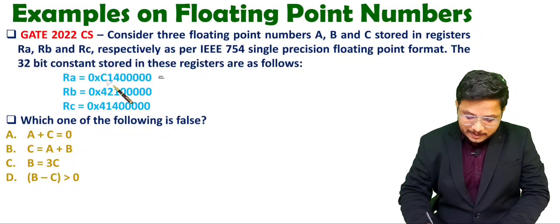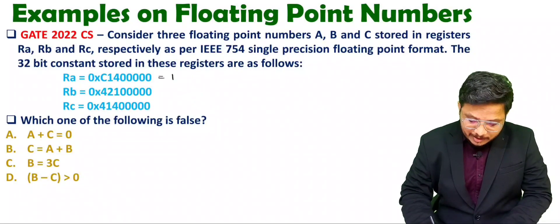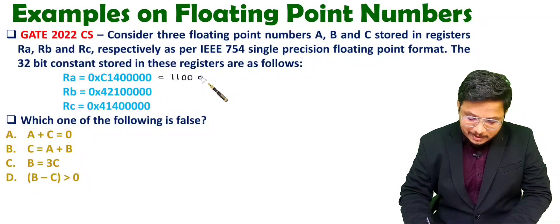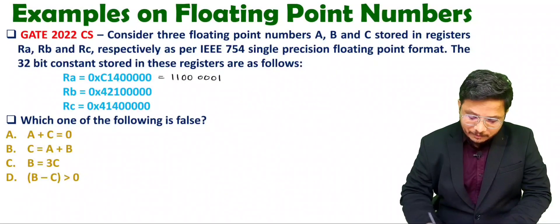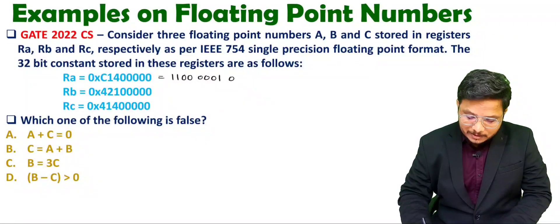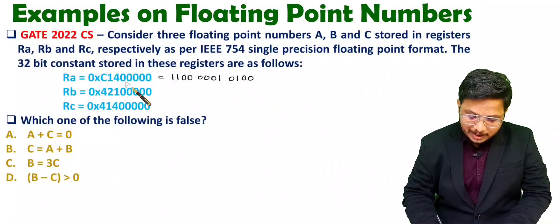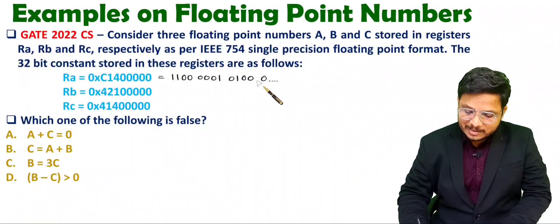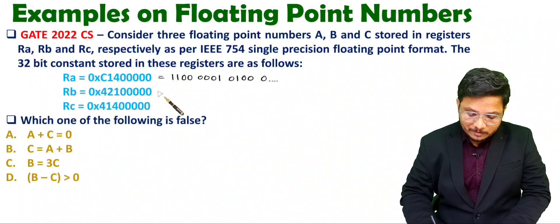For RA, C means 1100, then 1 means 0001, then 4 means 0100, and then all zeros. So I am just giving extension with zeros.